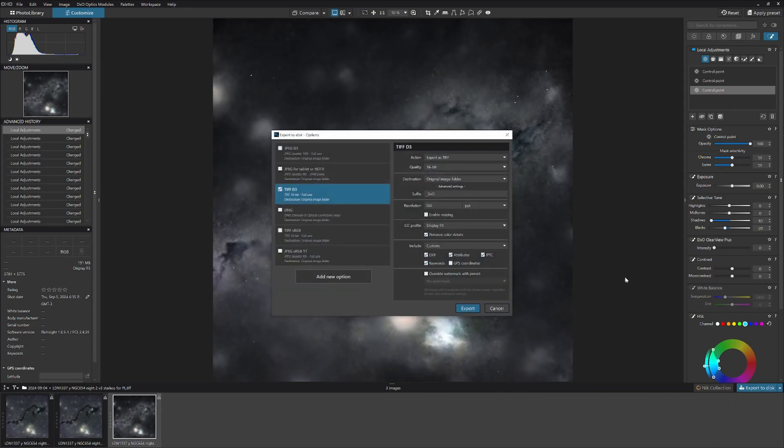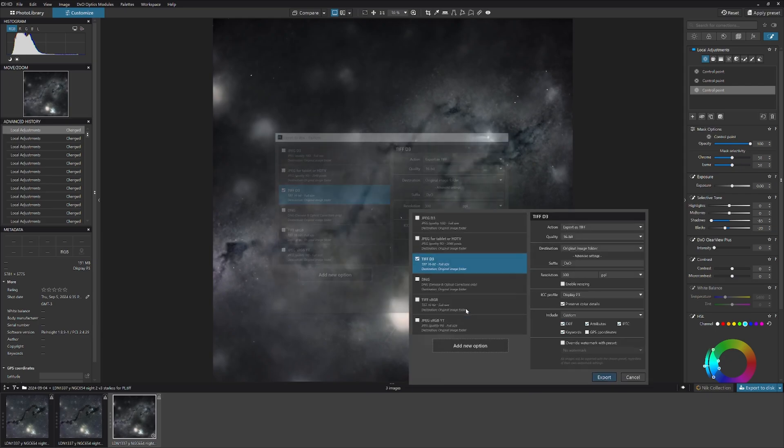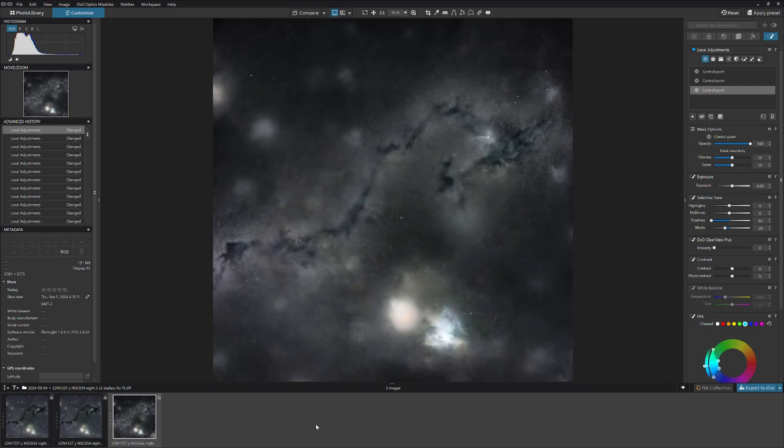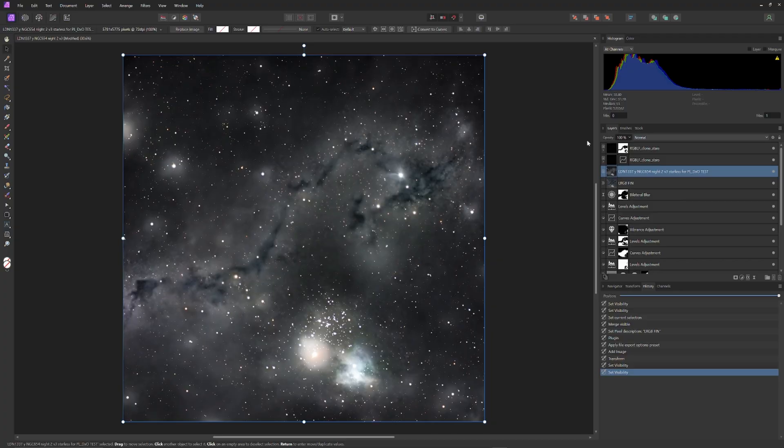Now I'll go to the Export tool on the right and I've already made an export template marked TIFF D3 for TIFF Display 3 Color Profile. Then I'll take the exported image into Affinity Photo and composite back the stars in it.